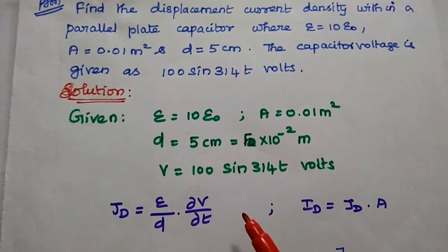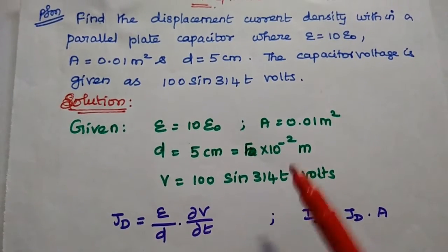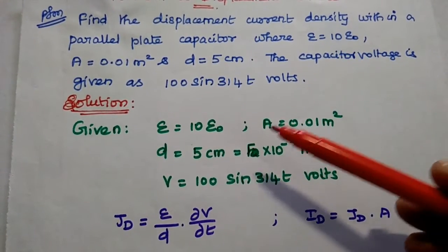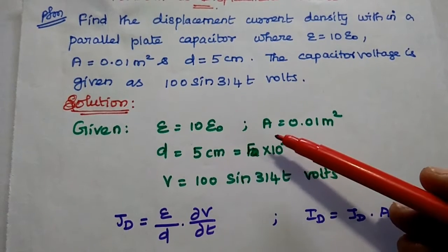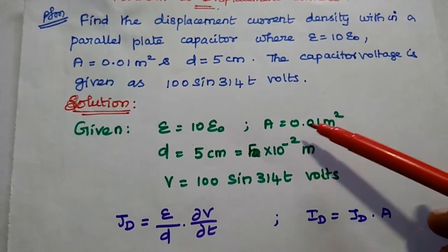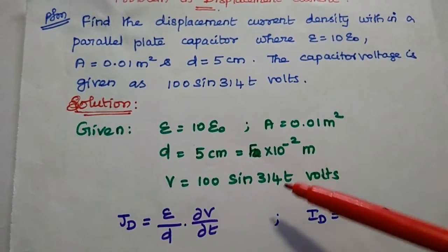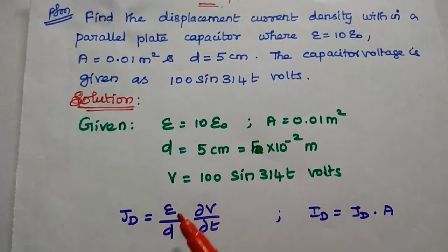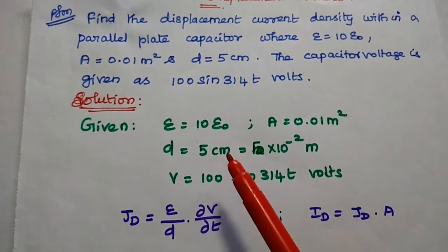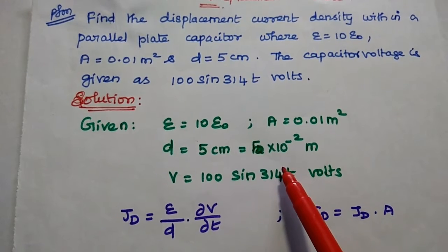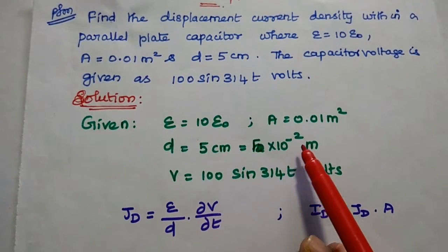First, we are going to write the given data. Here the epsilon value is 10 times the epsilon naught value. Area is equal to 0.01 meter squared. The separation between the plates D is equal to 5 centimeters, which can be written as 5 into 10 to the power minus 2 meters. The voltage is equal to 100 sin 314T.